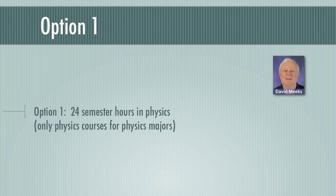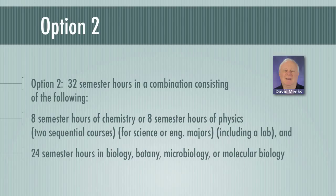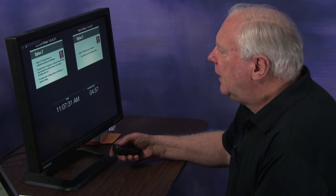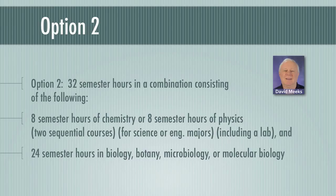Category B has four options. Option one requires 24 semester hours in physics — these must be physics courses for physics majors. Option two requires 32 semester hours in combination: eight semester hours of chemistry or eight semester hours of physics — two sequential courses covering the entire field, including a lab — plus 24 more semester hours in biology, botany, microbiology, or molecular biology.